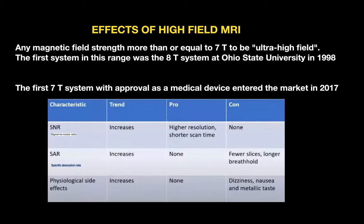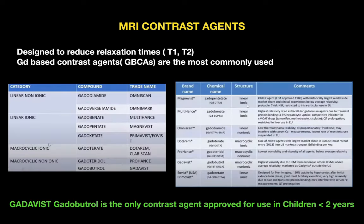Regarding ultra-high field MRI: any magnetic field strength of 7 tesla or more is called ultra-high field. The first system in this range was an 8-tesla system at Ohio State University in 1998; the first 7-tesla system with approval as a medical device entered the market in 2017. Effects include increased signal-to-noise ratio, increased specific absorption rate, and increased physiological side effects like dizziness, nausea, and metallic taste. However, it provides high-resolution scans with very short scanning times.